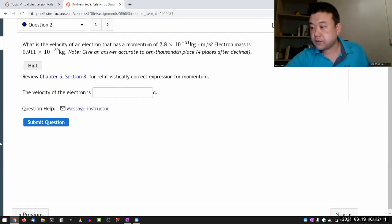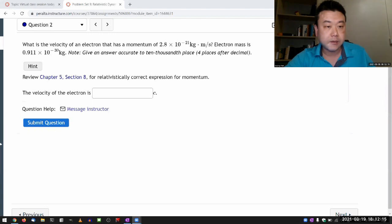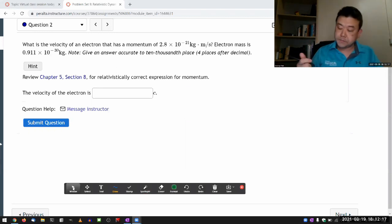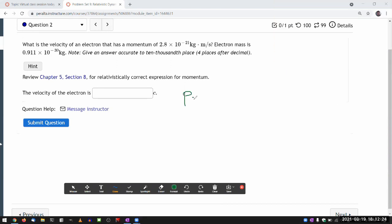So when you look at the expression for relativistic expression for momentum, it has a bit of complexity in it because relativistic momentum is equal to gamma mv. That's how it's usually written and usually how people remember it.